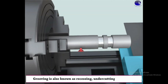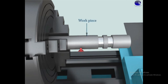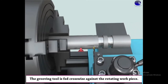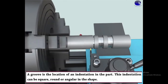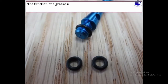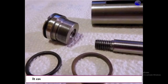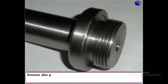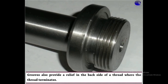Grooving — also known as recessing, undercutting, or necking. Grooving means reducing the diameter in between — that process is called grooving. The groove is the location of the indentation in the part. The indentation can be square, round, or angular in shape. The function of grooving is usually to allow room for fitting a part such as a rubber O-ring. Grooves also provide a relief on the back side of a thread where the thread terminates.